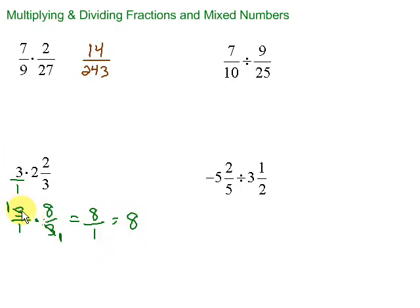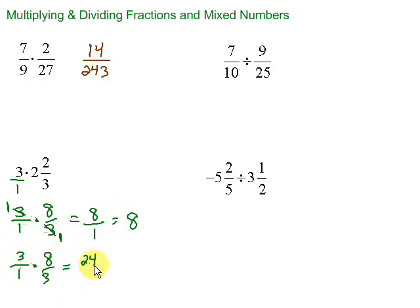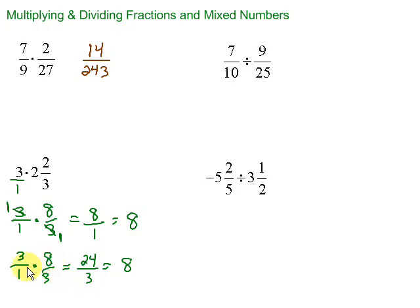If you don't want to simplify before, that's fine. We can still work the problem out and it'll come out the same way. We have 3 over 1 times 8 over 3. Multiply straight across: 8 times 3 is 24, 1 times 3 is 3. Then 24 divided by 3 is just 8. We end up in the same place. So you can simplify before you multiply, or you can simplify after you multiply. Either one works — whatever you like to do.